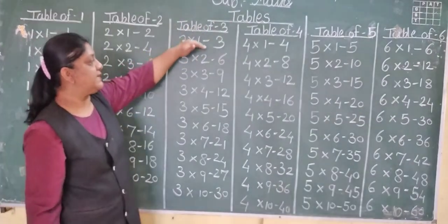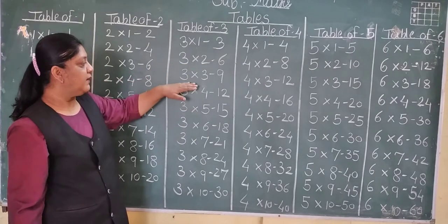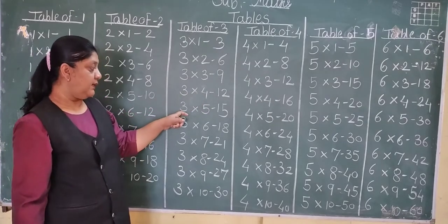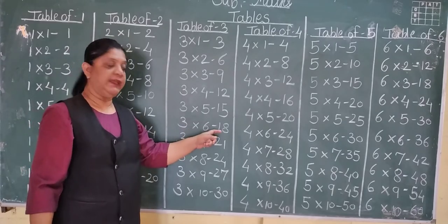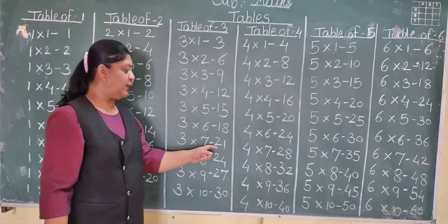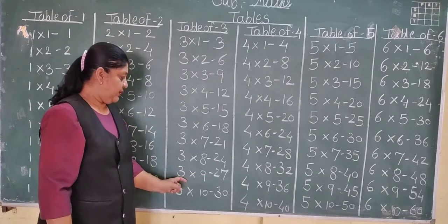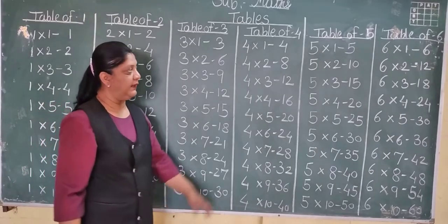Now table of 3: 3 ones are 3, 3 twos are 6, 3 threes are 9, 3 fours are 12, 3 fives are 15, 3 sixes are 18, 3 sevens are 21, 3 eights are 24, 3 nines are 27, 3 tens are 30.